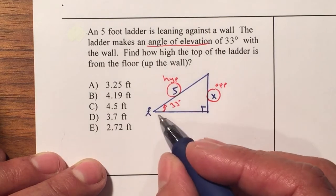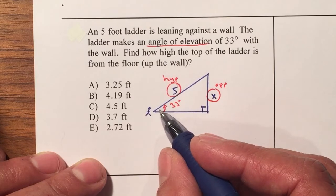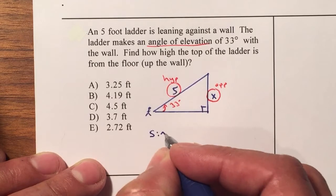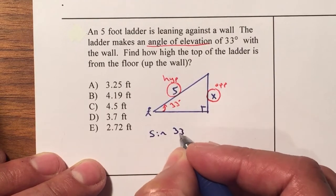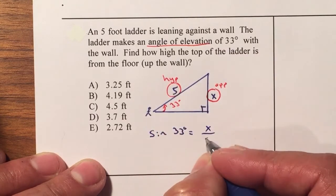So therefore we need to decide if we're going to use sine cosine or tangent SOHCAHTOA. It's opposite over hypotenuse so therefore we have to use the sine of 33 degrees. This is equal to the opposite which is X over your hypotenuse which is 5.